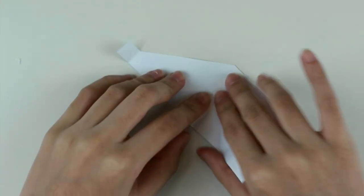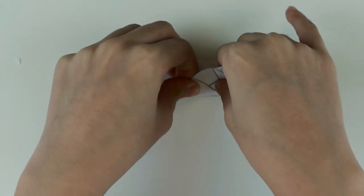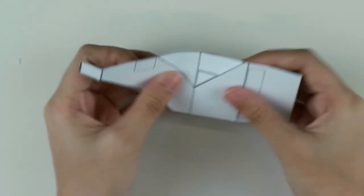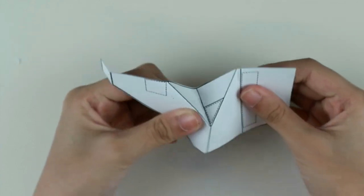For the triangular section, fold it inward. It should look something like this.